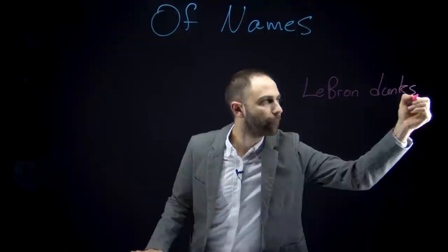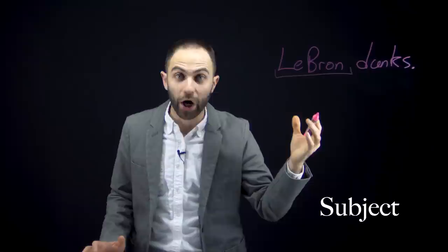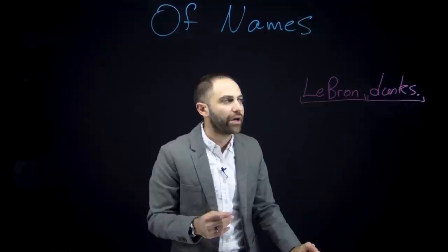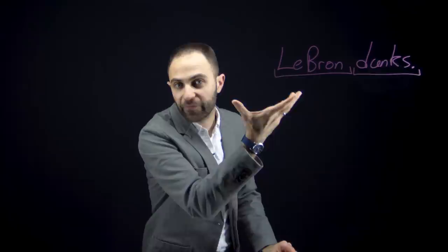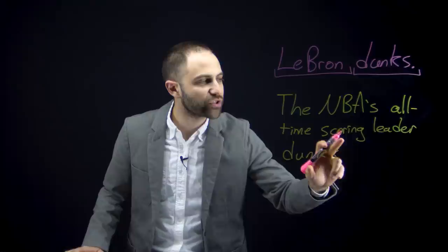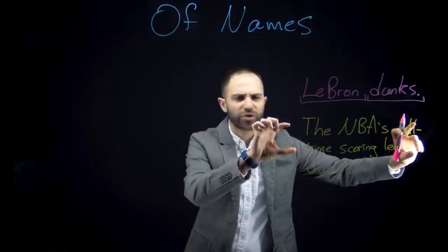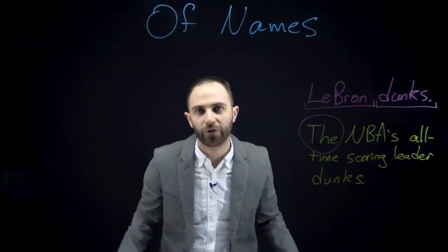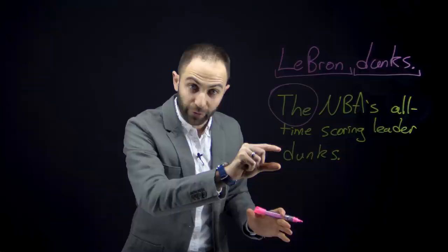Consider the sentence 'LeBron dunks.' This sentence has two parts: the subject, that's LeBron, and the predicate, dunks. LeBron happens to be a proper name, but you could write a sentence with a different expression in the subject place — for example, 'The NBA's all-time scoring leader dunks.' That's a definite description because it starts with the definite article 'the.' This sentence also has a subject and a predicate, and the subject, although not a proper name, is still what Mill would call a name.